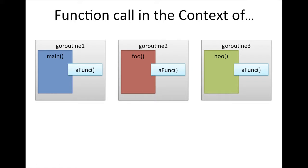And aFunc, when it's called by main, is within the context of goroutine1. Why? Because aFunc's caller is main, and since main is in the context of goroutine1, it therefore means that aFunc, when it's called by main, is within the context of its caller. Hence, it's in the context of goroutine1.